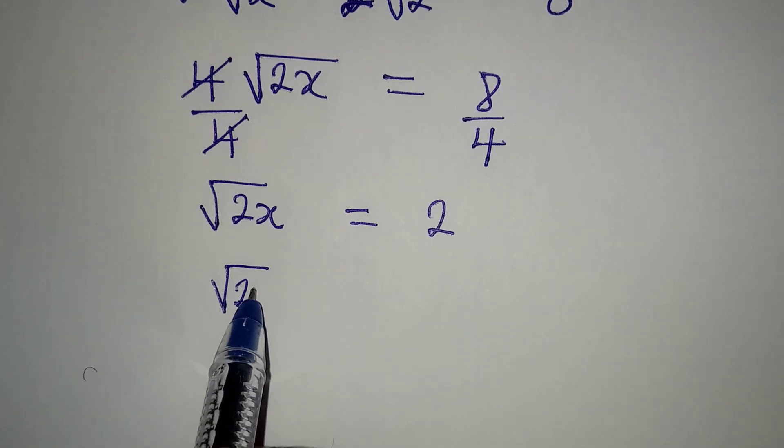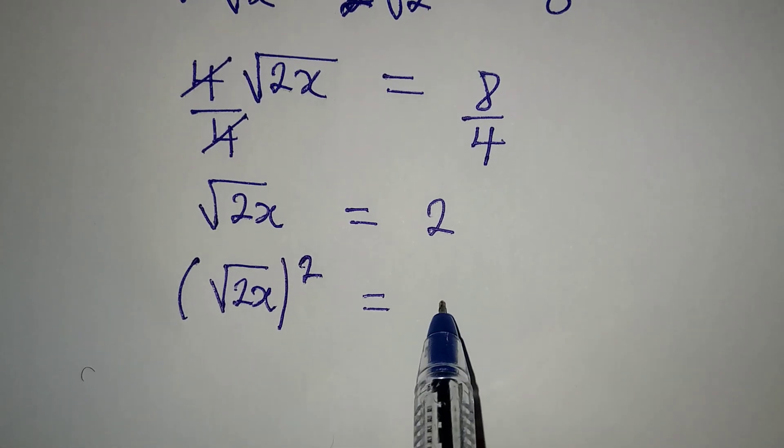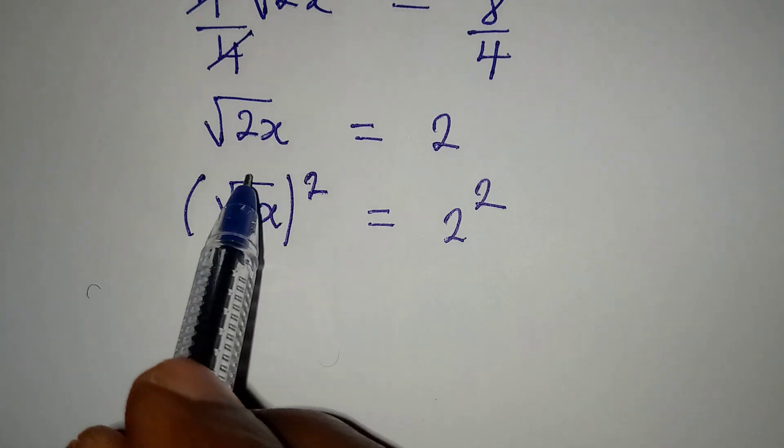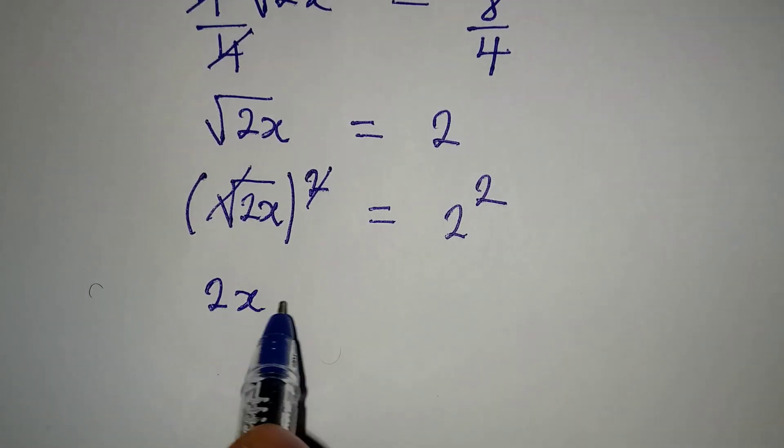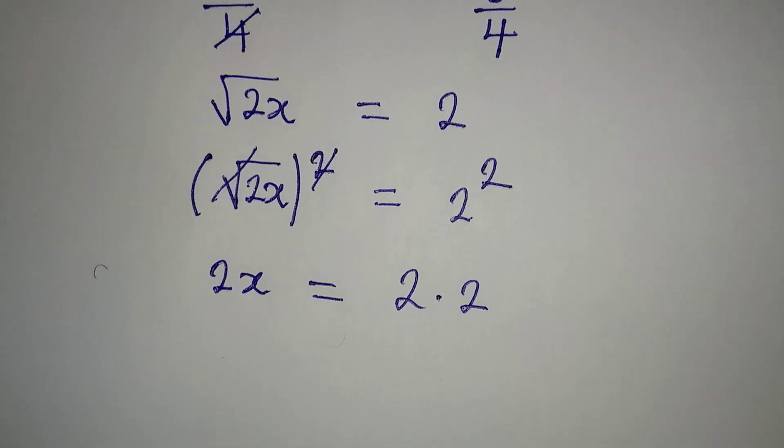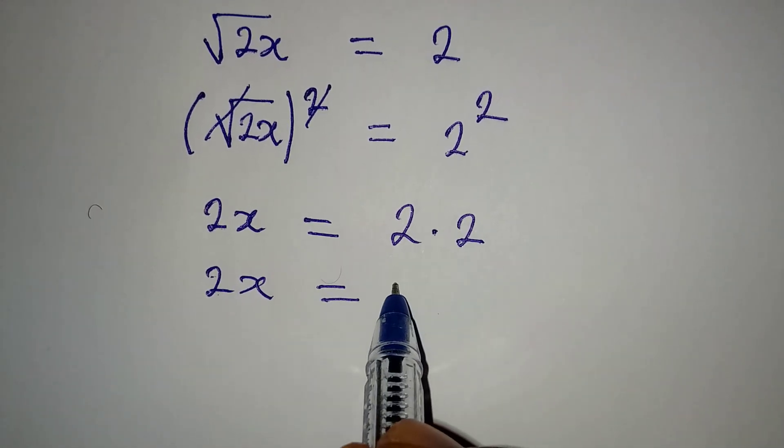So I will square both sides, and it's equal to 2 squared. From here, 2 will go with 2, and then 2x will be equal to 2 times 2, so 2x is going to be equal to 4.